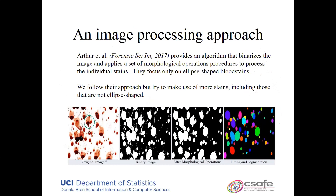We build on an approach from Michael Taylor's group in New Zealand — the Arthur et al. publication. They took an approach graphically shown on this slide: starting from an image of a bloodstain pattern, they turned it into a binary image, then did some morphological operations. They focused on the parts of that image that were ellipses and avoided areas where multiple ellipses overlap or where large shapes don't look like an ellipse. They focused on ellipses and produced some summary statistics.